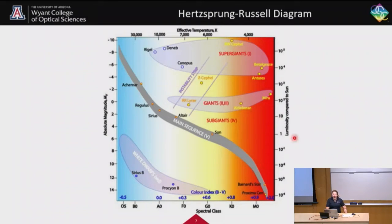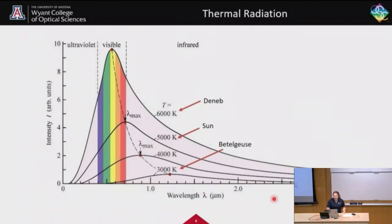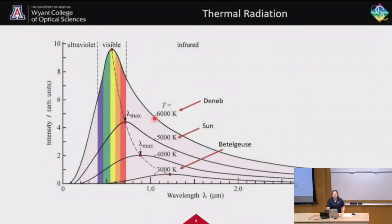Let's think about how a star's size and temperature affect the color we observe. Everything with a temperature gives off light — this is the thermal spectrum — not just in the visible range but also in lower and higher energy light. The sun is shown here at 5,000 degrees Kelvin. Deneb, in the constellation Cygnus, is 6,000 degrees Kelvin and gives off much more blue light. Betelgeuse, a very red star, gives off even less blue, so it appears red in our sky.